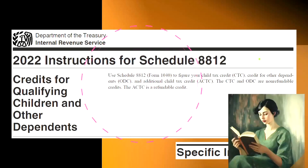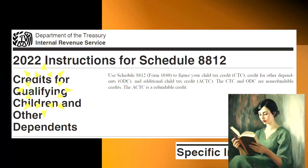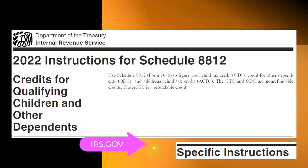Most of this information comes from instructions for Schedule 8812, Credits for Qualifying Children and Other Dependents, Tax Year 2022, specific instructions you can find on the IRS website, irs.gov.